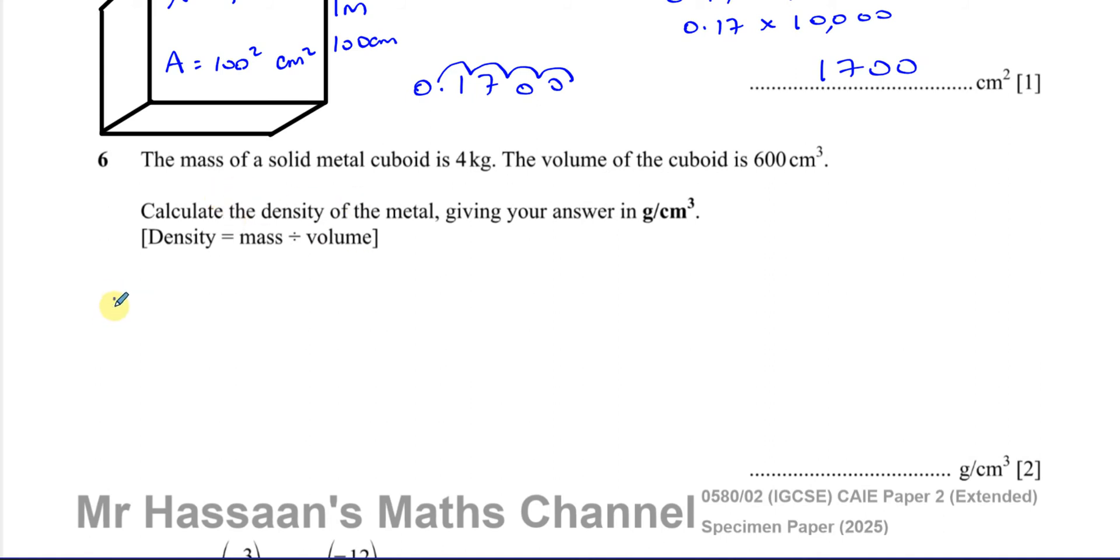So we know that, as I told us, density is equal to the mass divided by the volume. So we want the density in grams per centimeters cubed. So the mass is 4 kilograms. So let's change this into grams first. So we know that 1 kilogram is equal to 1,000 grams. So 4 kilograms is 4,000 grams. So we convert the units according to grams because we want grams per centimeters cubed. And the volume, we want it in centimeters cubed. Well, it is in centimeters cubed, so we don't have to convert that unit. That's fine. So therefore, the mass is 4,000 and the volume is 600.